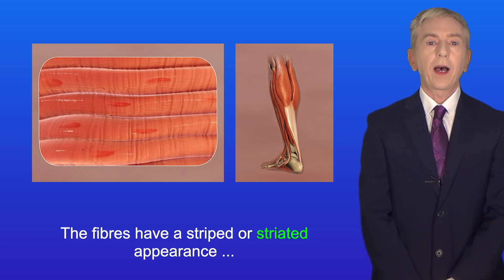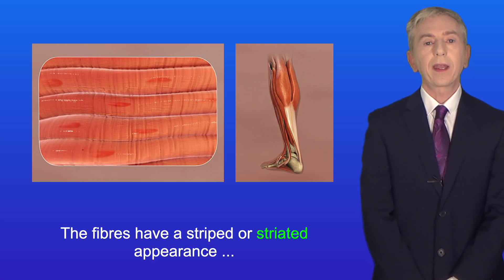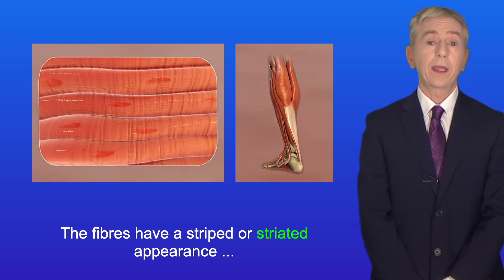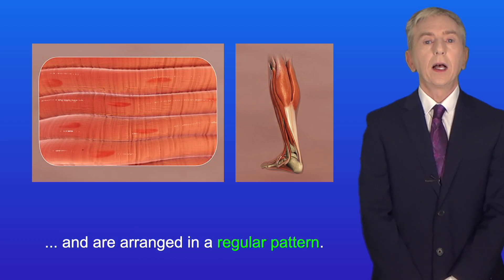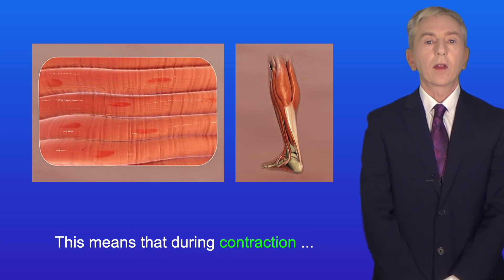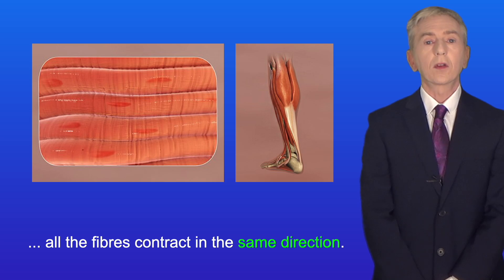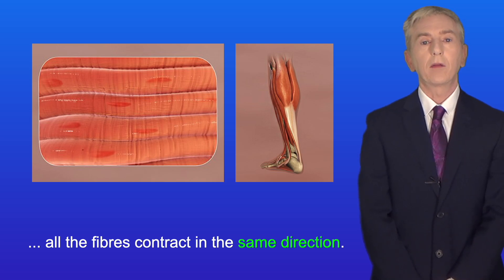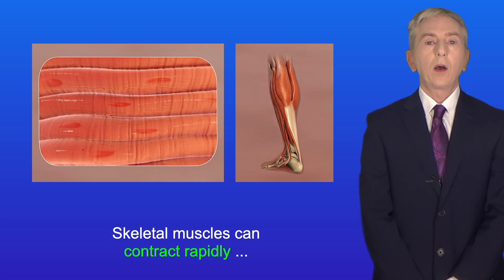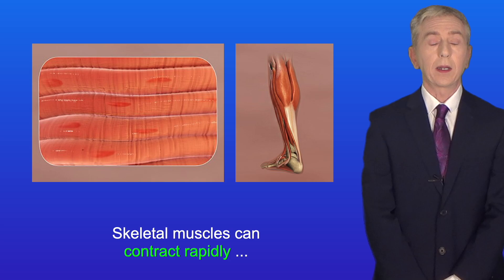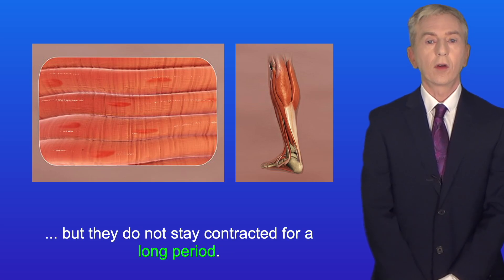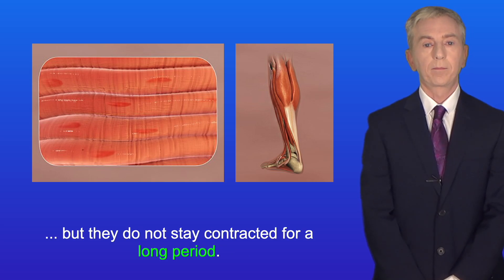The fibers have a striped or striated appearance and are arranged in a regular pattern. This means that during contraction all the fibers contract in the same direction. Skeletal muscles can contract rapidly but they do not stay contracted for a long period.